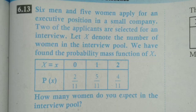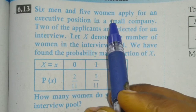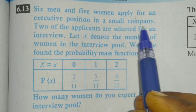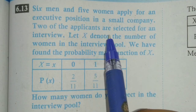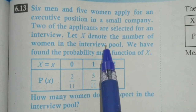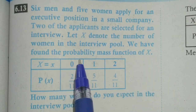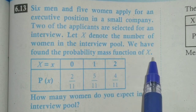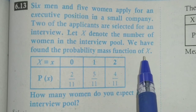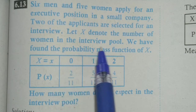Hi children, this is the 12th business math, 6th chapter. Example 6.13: Six men and five women apply for an executive position in a small company. Two of the applicants are selected for an interview. Let x denote the number of women in the interview pool. We have found the probability mass function of x, so x is the number of women in the interview pool.